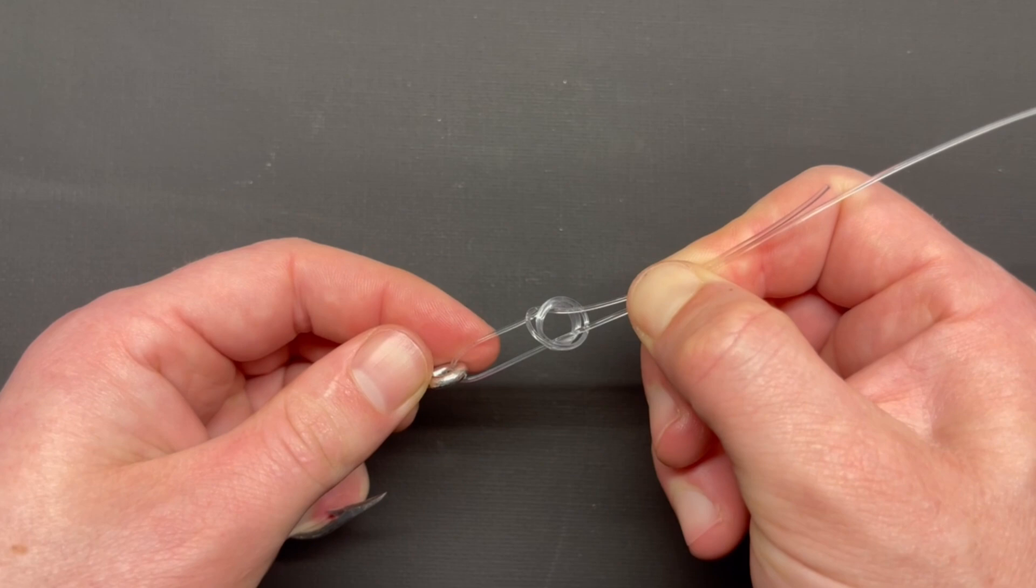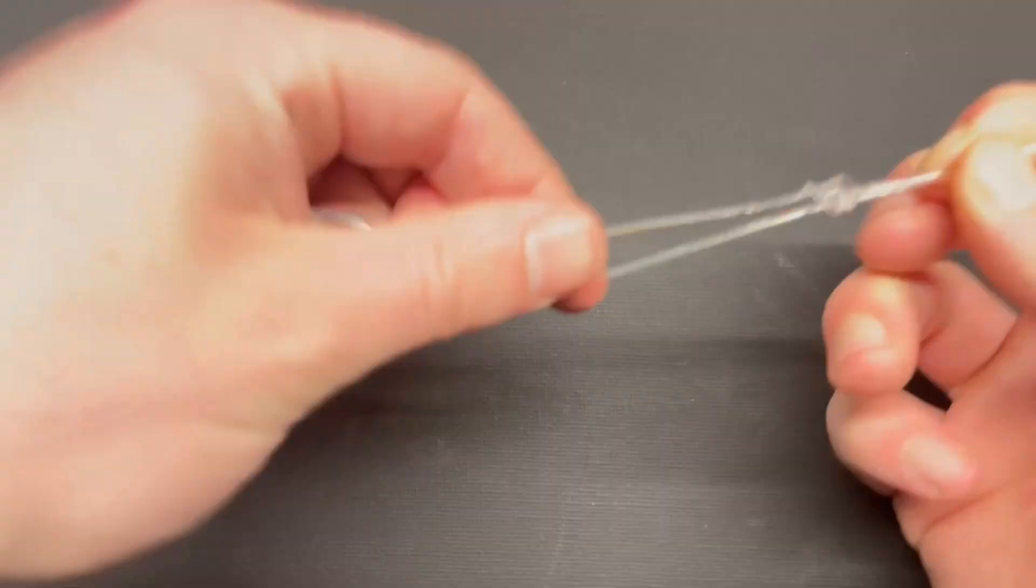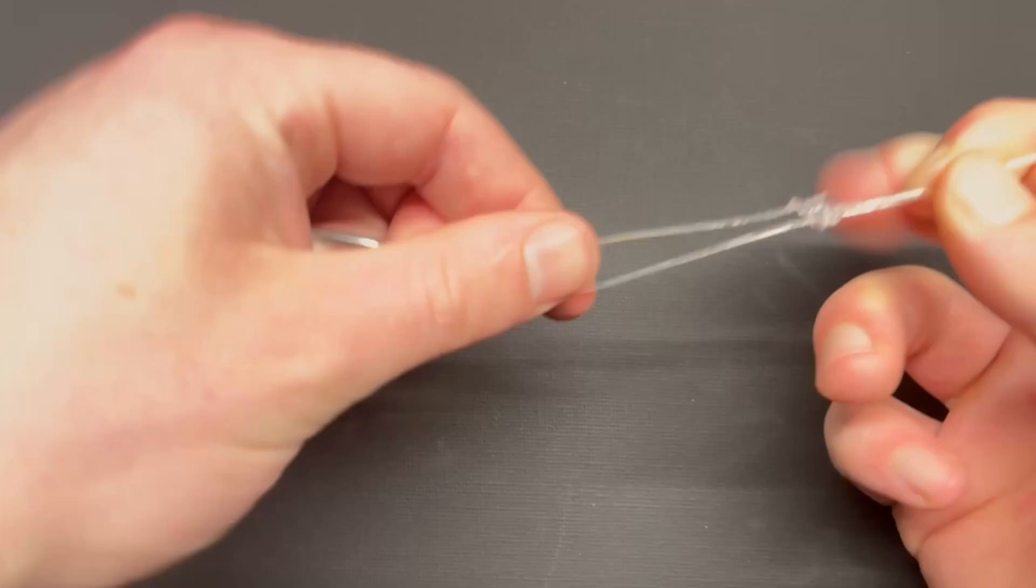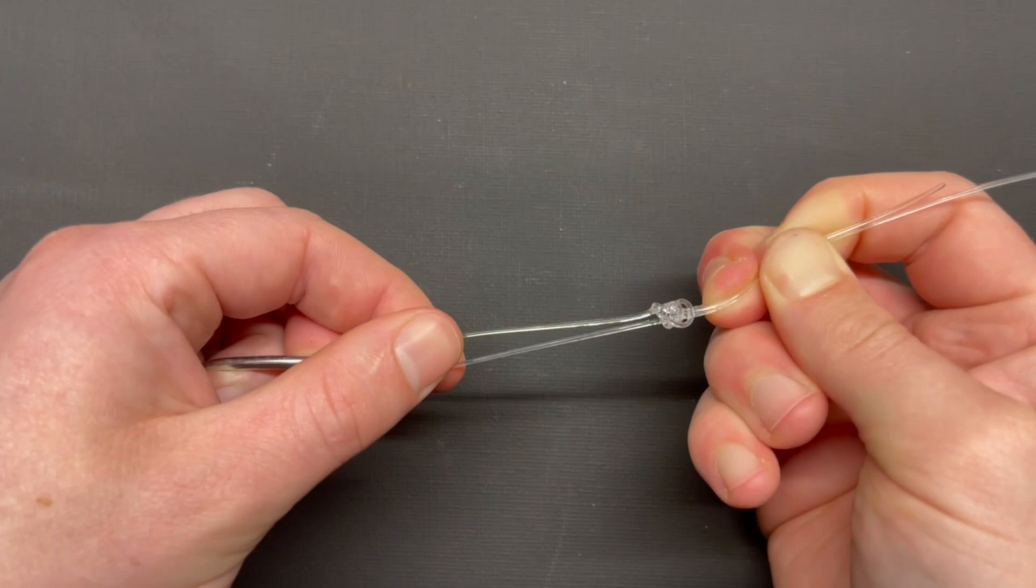When most of the slack is gone, you can wet your line. And what you can do is pull your main line so it goes down to the knot.